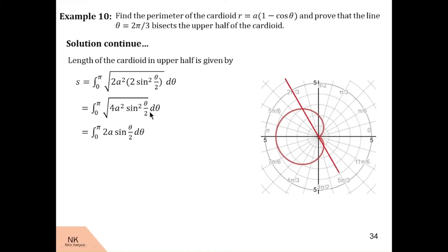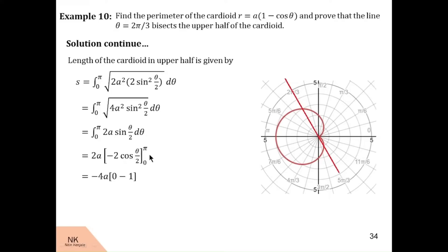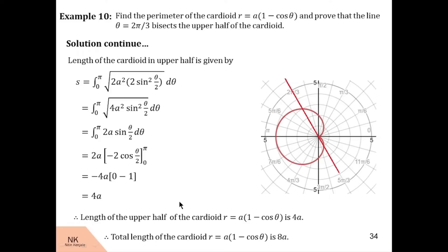Now this 2 into 2 is 4, and this 4a square when taken out of the under root becomes 2a. Under root of sin square theta by 2 is just sin theta by 2. Now integral of sin theta by 2 d theta is minus cos theta by 2 upon 1 by 2, and that upon 1 by 2 becomes 2. Now let us take out this minus 2 and substitute the limits. So we have minus 4a outside. Cos pi by 2 is 0 minus cos 0 which is 1. Minus into minus becomes plus, so we have s is equal to 4a. This is the length of the cardioid in the upper half, so the perimeter of the cardioid is twice this length, which is 8a.